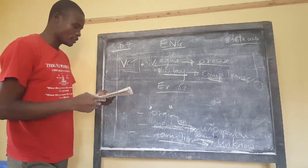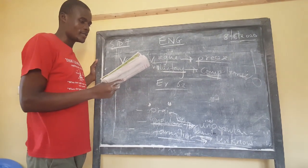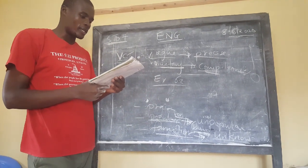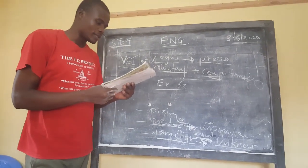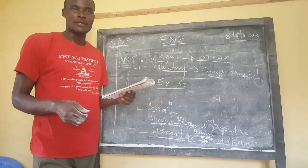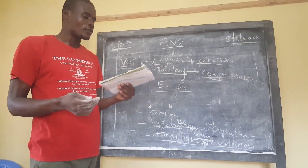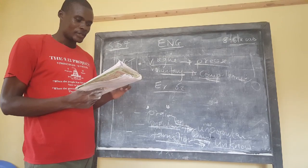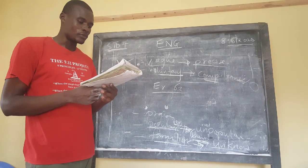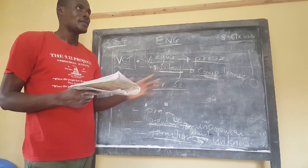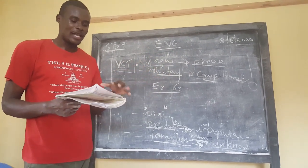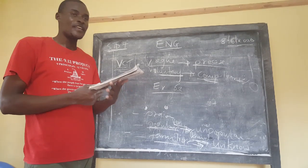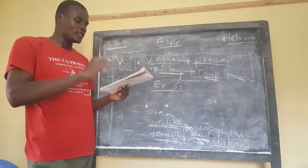Exercise 62, number two: write the opposite of the following words. Like 'honest' — we talk about 'dishonest'. 'Temporary' is to 'permanent' — normally we build temporary houses at home, but in towns we build permanent houses. The word 'clarity' — the opposite is 'confusion'. When there is clarity, things are going on well, but when there is confusion, like right now in Kenya, people don't know what is happening.